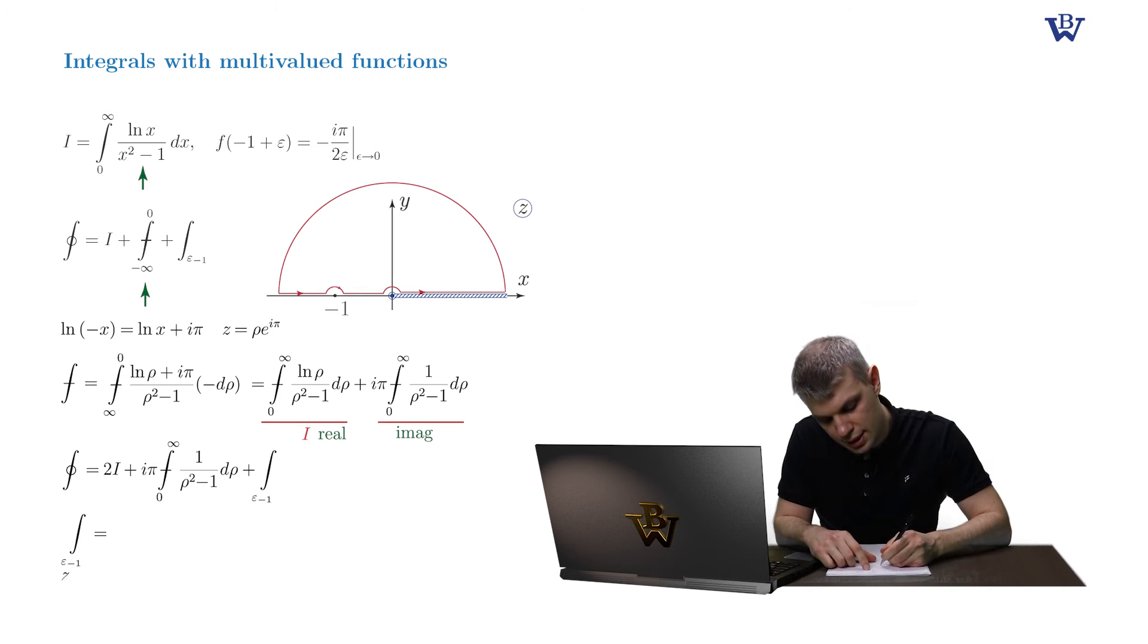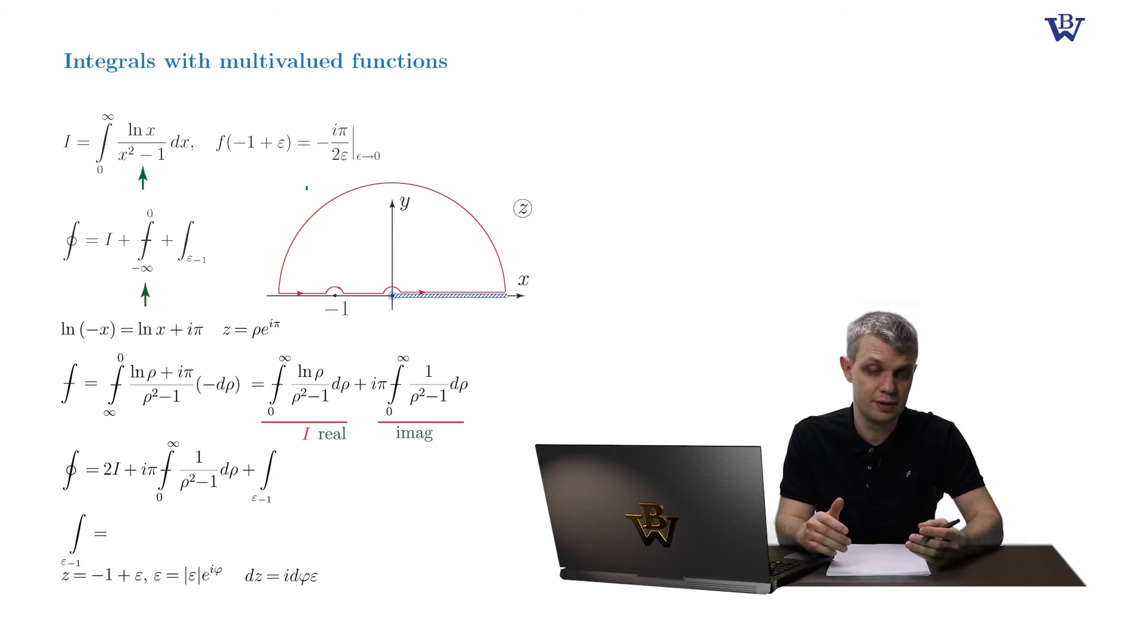The suitable parameterization is z equals negative one plus ε, and ε itself is parameterized as modulus of ε times e to iφ. Therefore, dz equals to iε dφ. The expansion of the integrand is presented on the slide already.